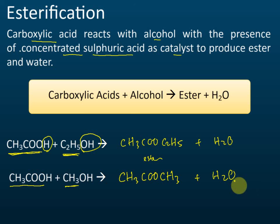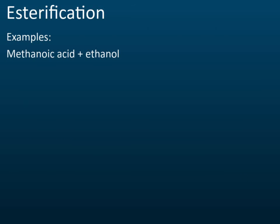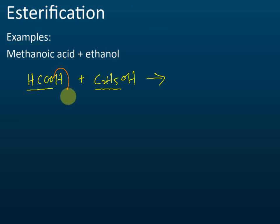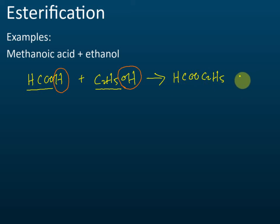That is esterification: carboxylic acid with alcohol produces ester and water. Example: methanoic acid reacts with ethanol. Methanoic acid is HCOOH, ethanol is C₂H₅OH. The formula of the ester formed is HCOOC₂H₅, plus water H₂O.